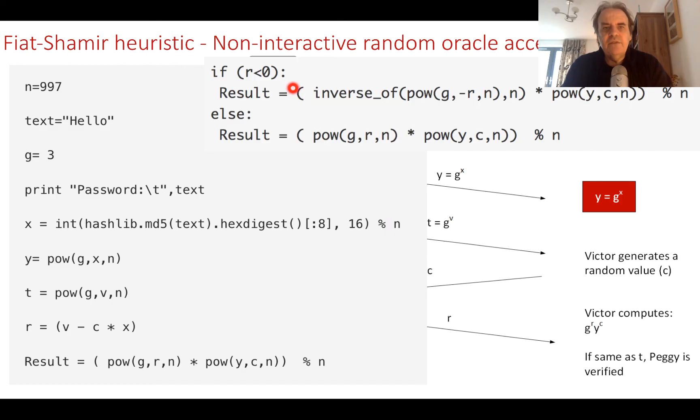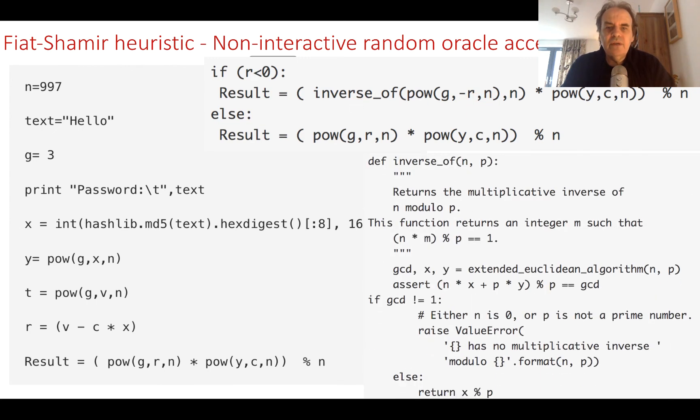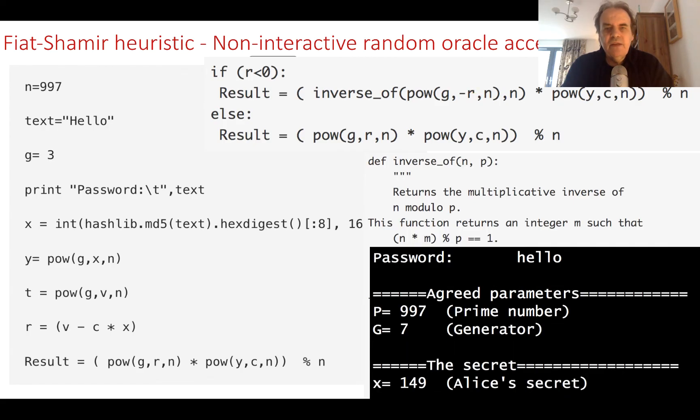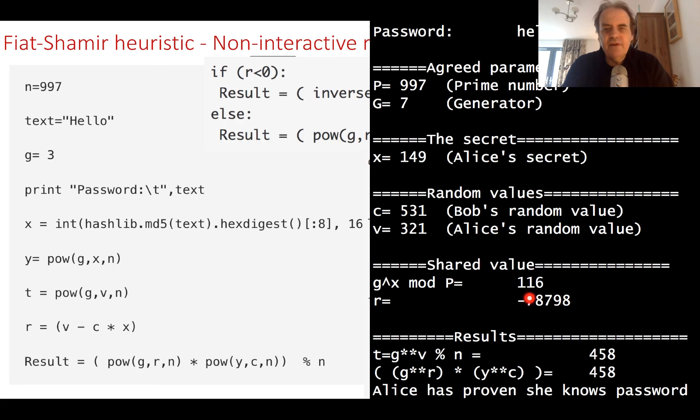In this case, if the value is less than zero, we take the inverse mod of g to the power of r mod n. This is done through a method called extended Euclidean. This way we can actually find the inverse of the value of g to the power of minus r, and it will work. So now we have a negative value here and it still works.